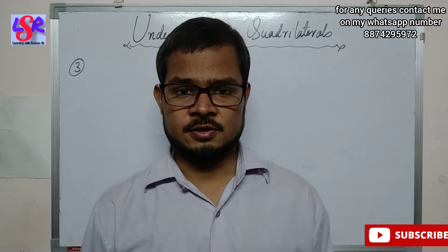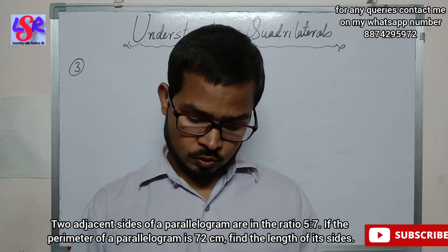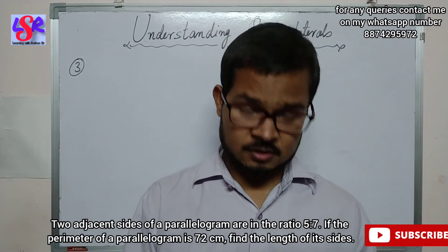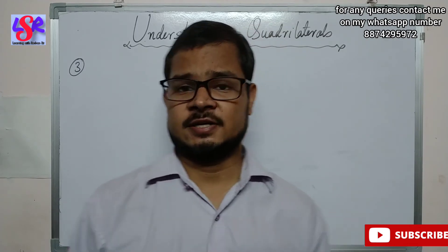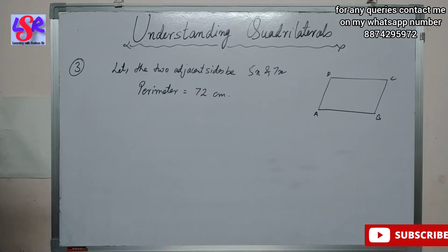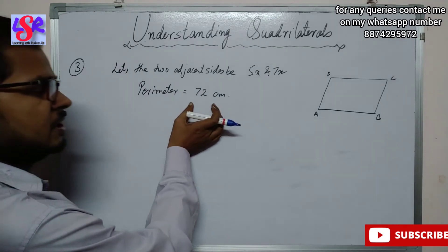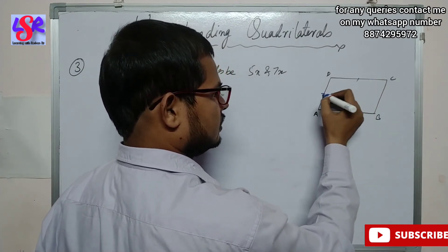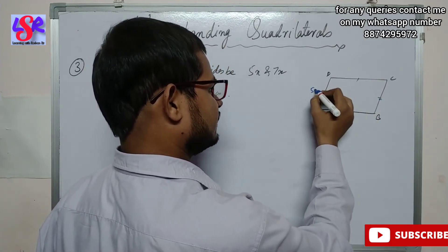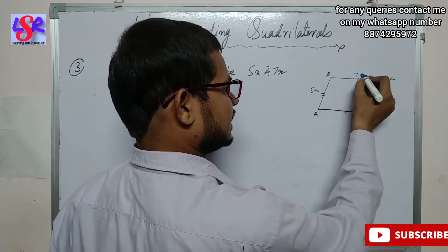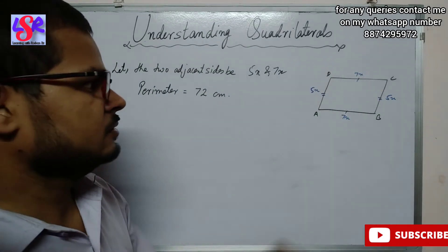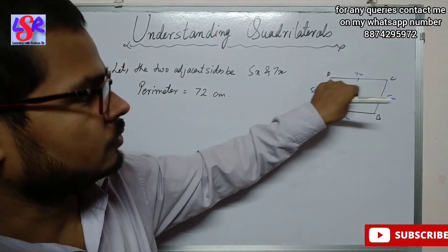Now we move to question 3. Here the two adjacent sides of a parallelogram are in the ratio 5:7. If the perimeter is 72, find the length of its sides. Let the two adjacent sides be 5x and 7x respectively, and the perimeter is given as 72 centimeters. Since opposite sides of a parallelogram are equal, the four sides are 5x, 7x, 5x, and 7x.